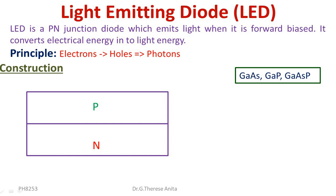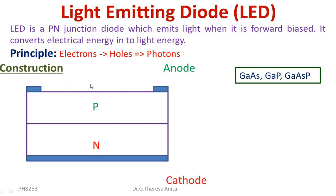For maximum light emission, the metal anode connection is made at the upper edges of the P layer, while the central region is left open for light emission. The cathode is connected at the bottom of the N layer.